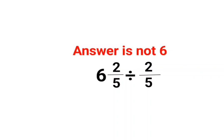Welcome everyone. A lot of people thought the answer for this question should be 6 because this and this gets cancelled, so 6 divided by 1, answer should be 6. Now this is where a lot of people made a silly mistake.